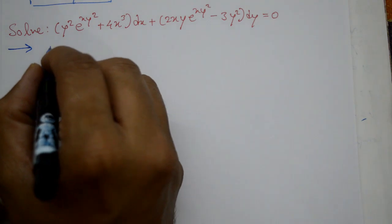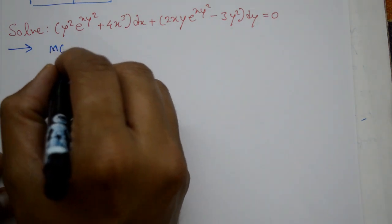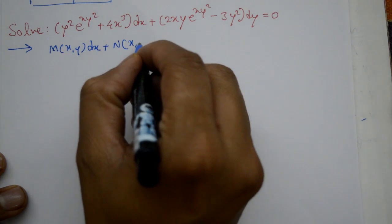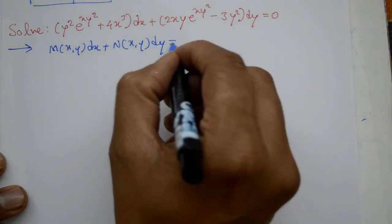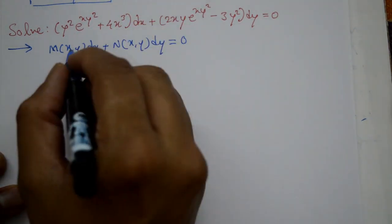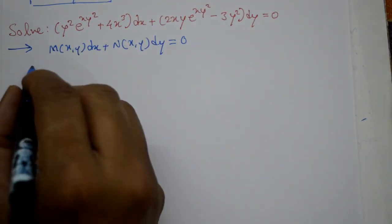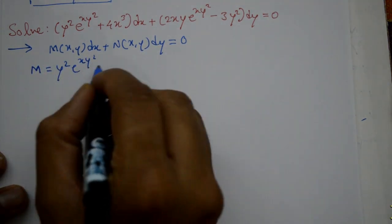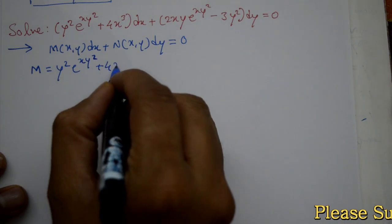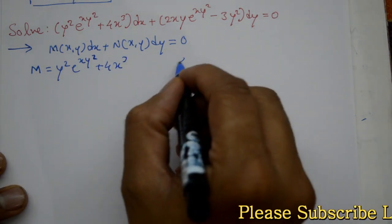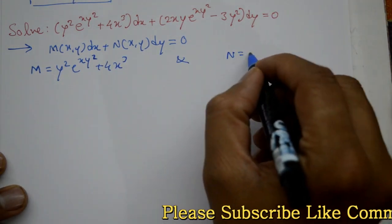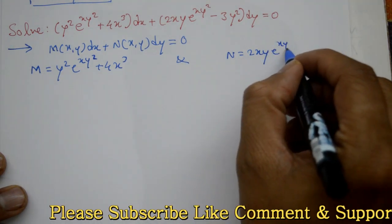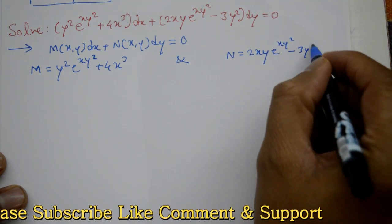A equation form is form me hai: M(x,y) dx + N(x,y) dy = 0. So M is equal to y² · e^(xy²) + 4x³, and N kya hai: 2xy · e^(xy²) − 3y².